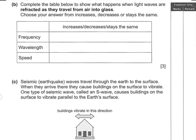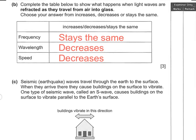Part B. Complete the table to show what happens when light waves are refracted as they travel from air into glass. They're travelling from a faster medium into one with a lower speed of light, so they're slowing down. The key thing to remember about frequency is that it stays constant across a boundary — waves arriving equal waves leaving. Because the wave is slowing down, speed will decrease and wavelength will also decrease. So: frequency stays the same, wavelength decreases, speed decreases.